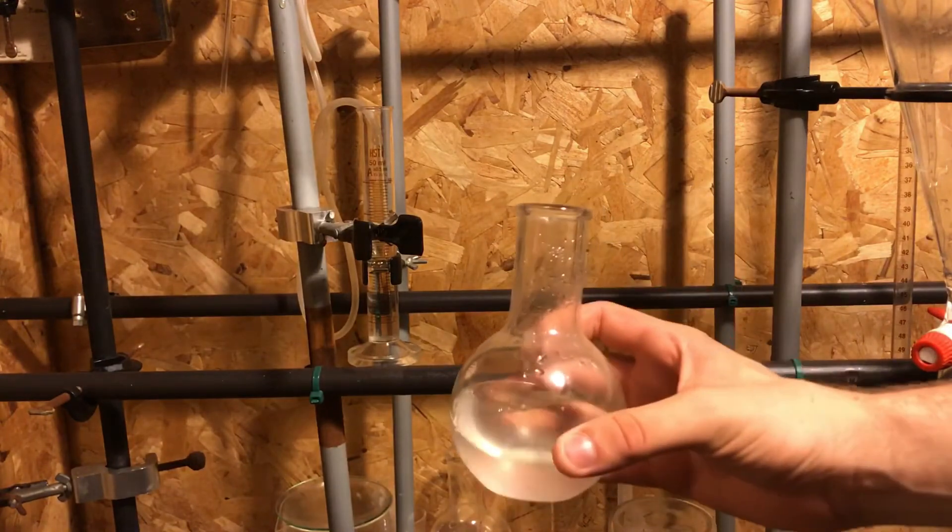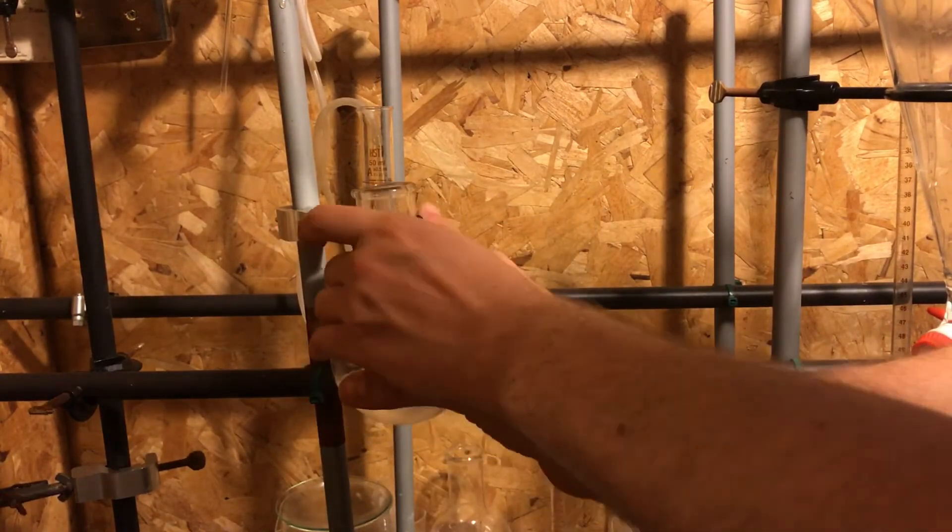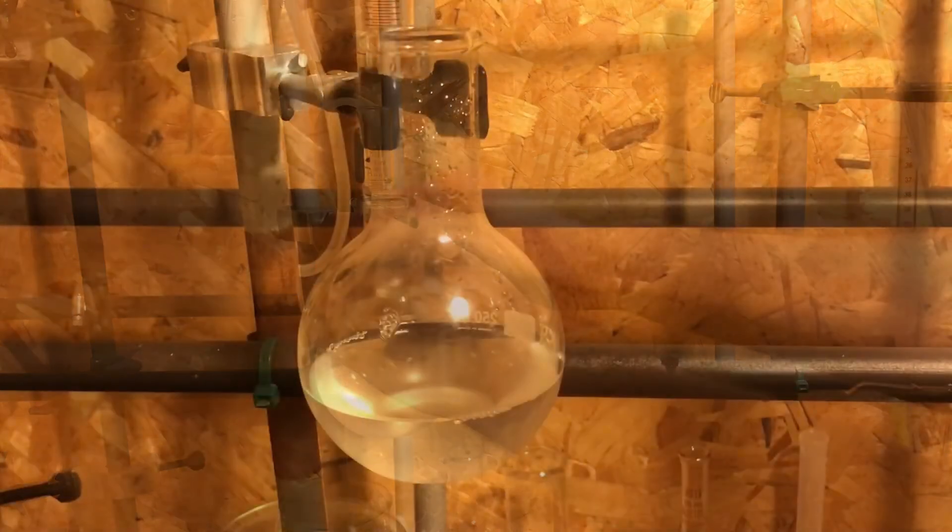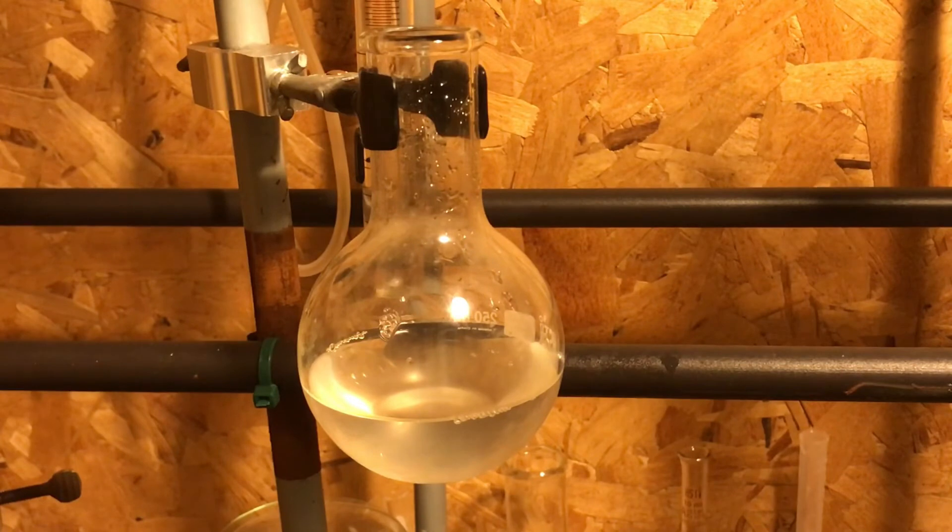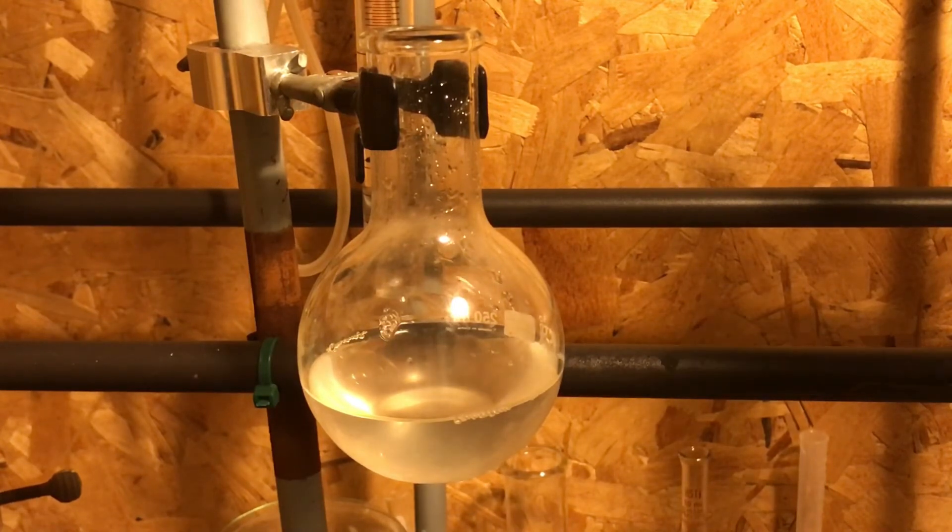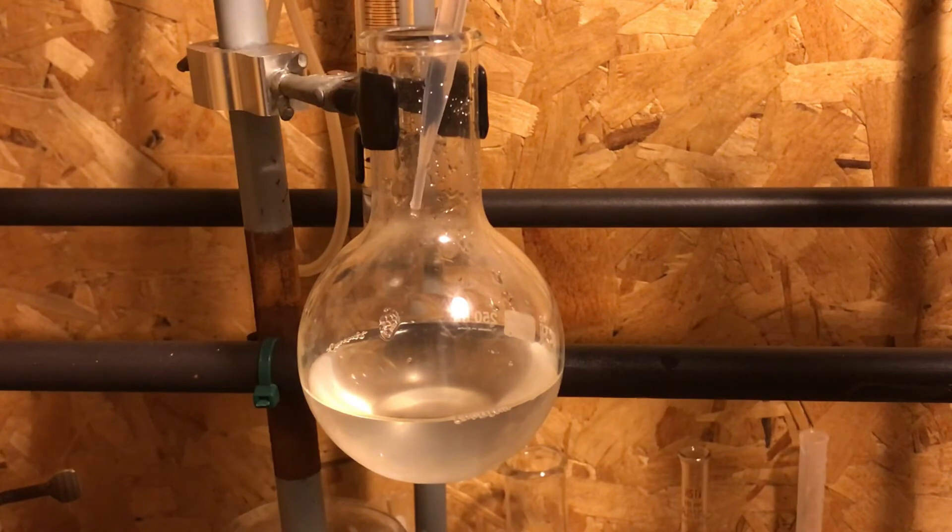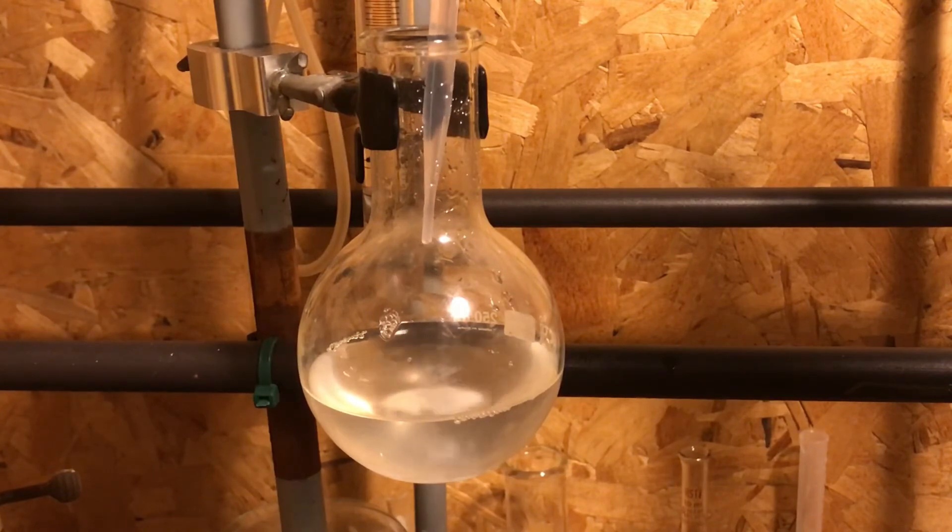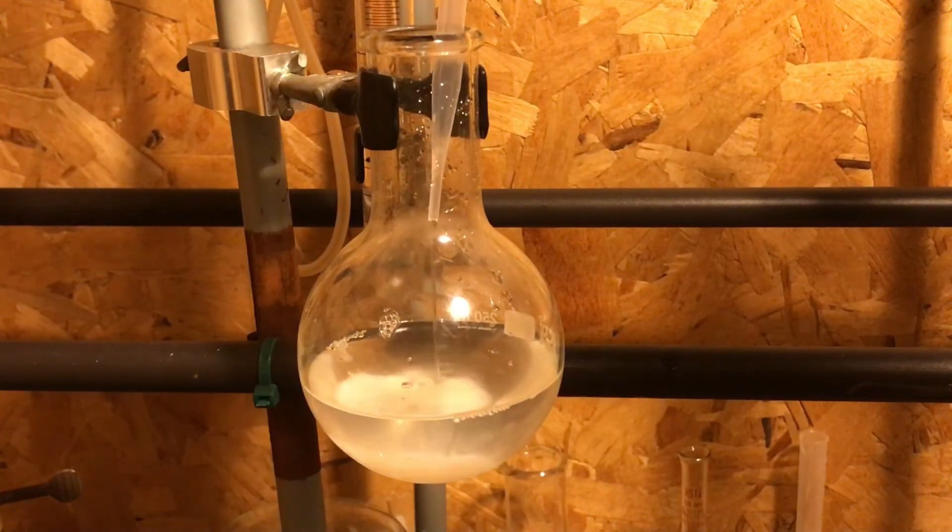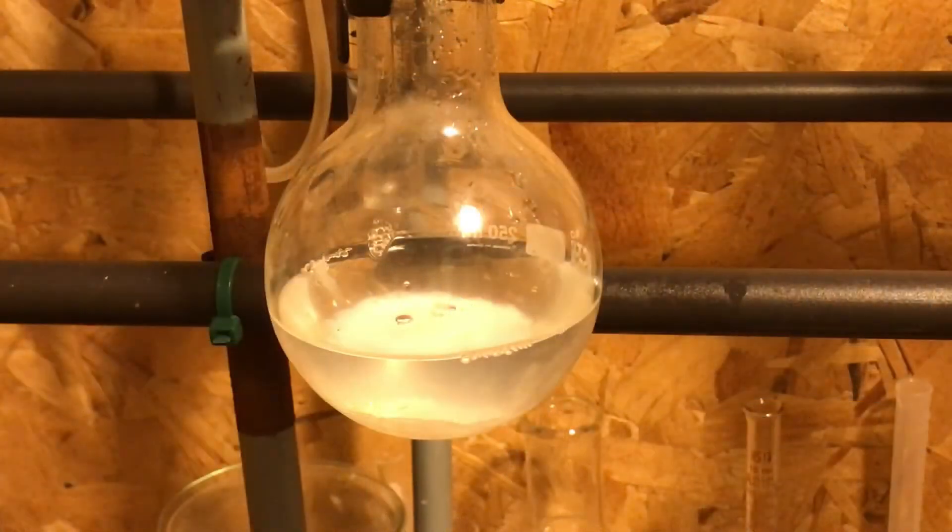Okay. So in this round bottom flask is calcium acetate. So we have the solution of calcium acetate. I'm going to very carefully drop in potassium hydroxide, potassium hydroxide, KOH, to the solution. And you should immediately see the formation of calcium hydroxide form.